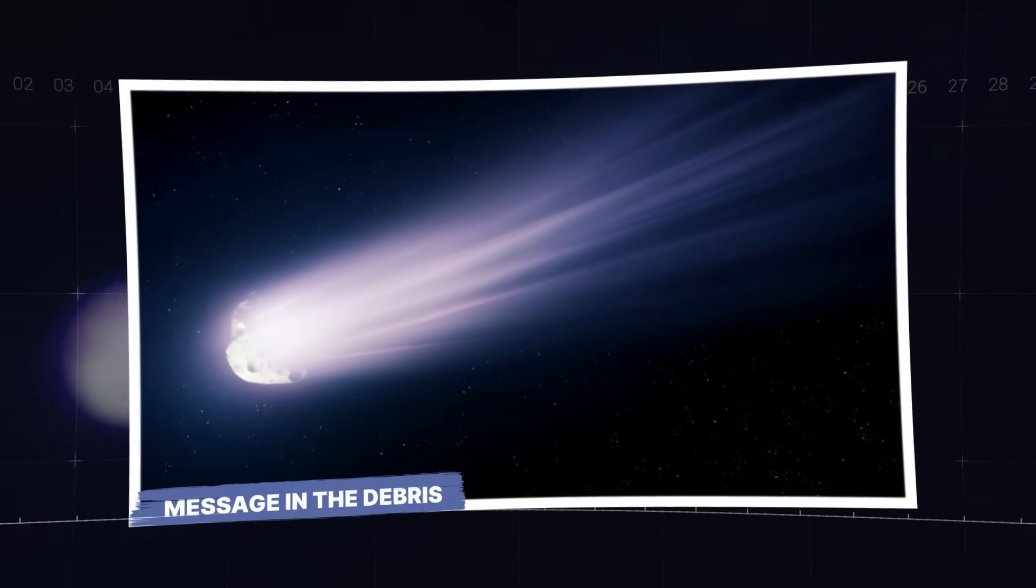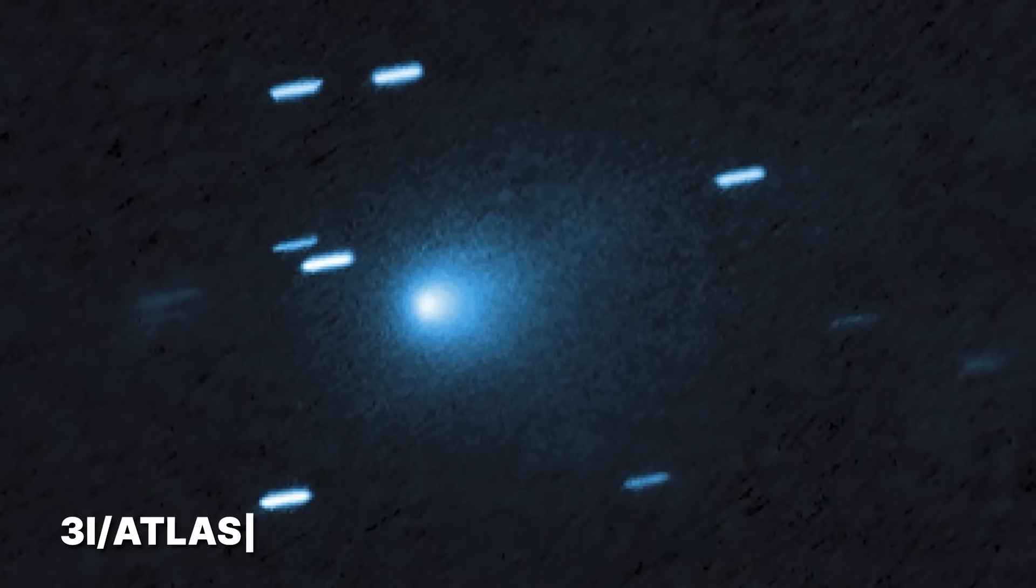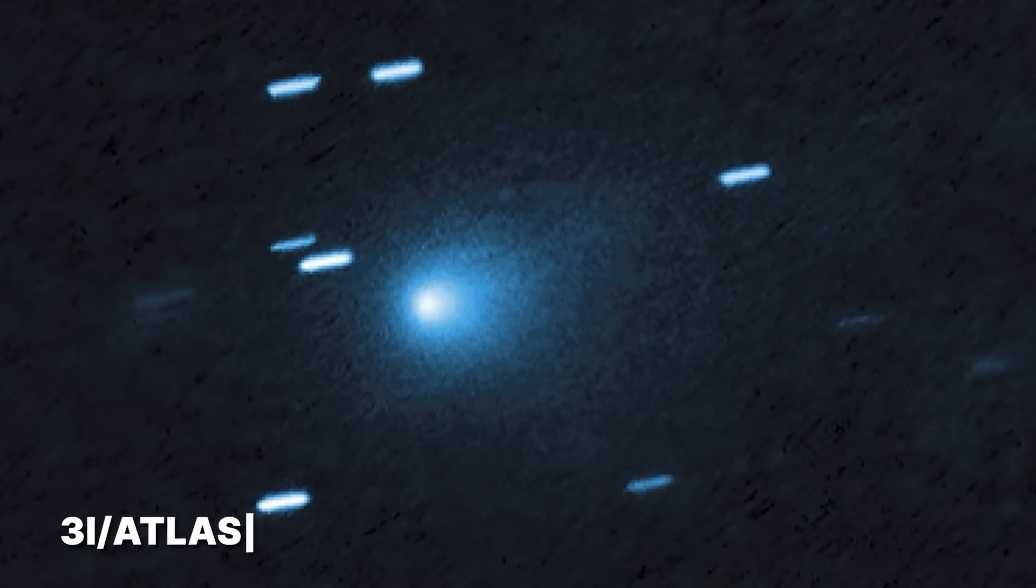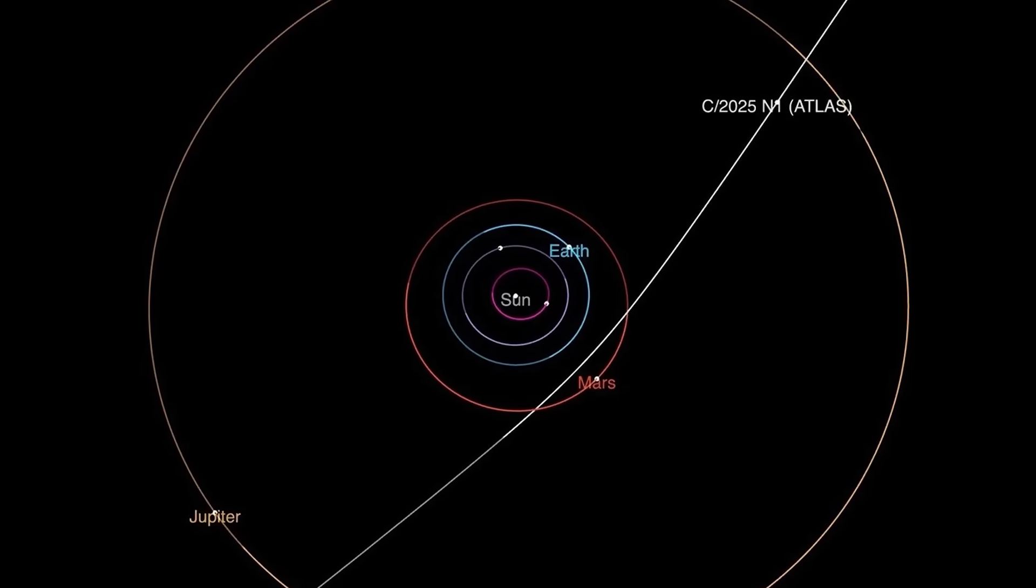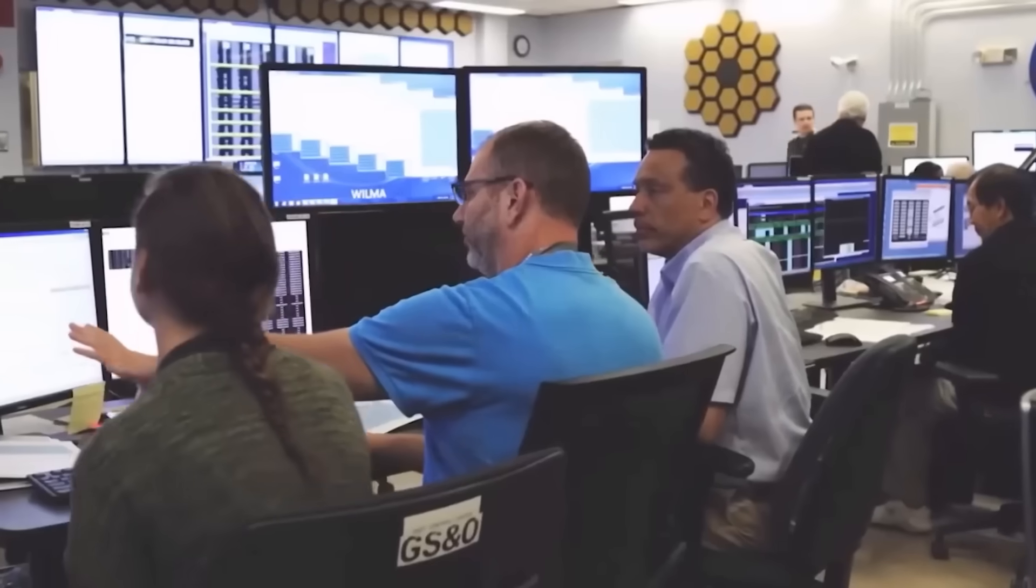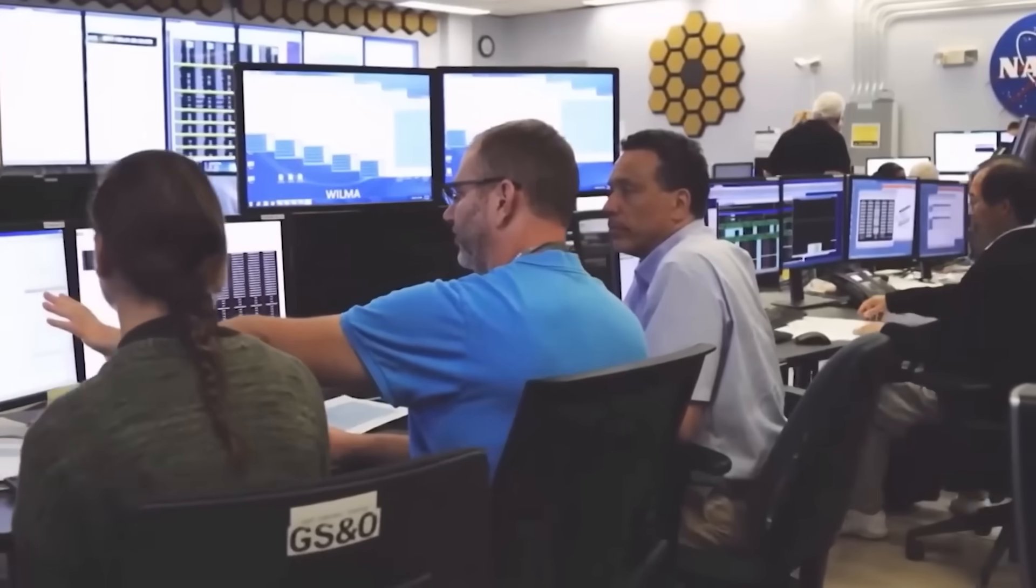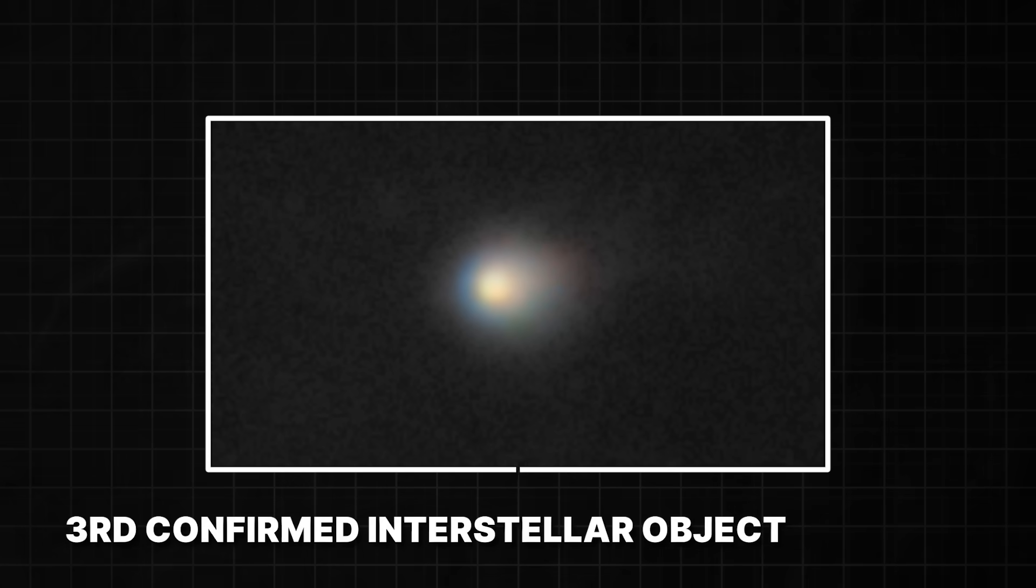Message in the debris. For most of its journey, the object known as 3i Atlas acted just as astronomers predicted. It was a faint blip on a telescope screen, a ghost from another star system passing through our own. Many people are crazy about these interstellar visitors. They're incredibly rare. This was only the third one we'd ever confirmed.